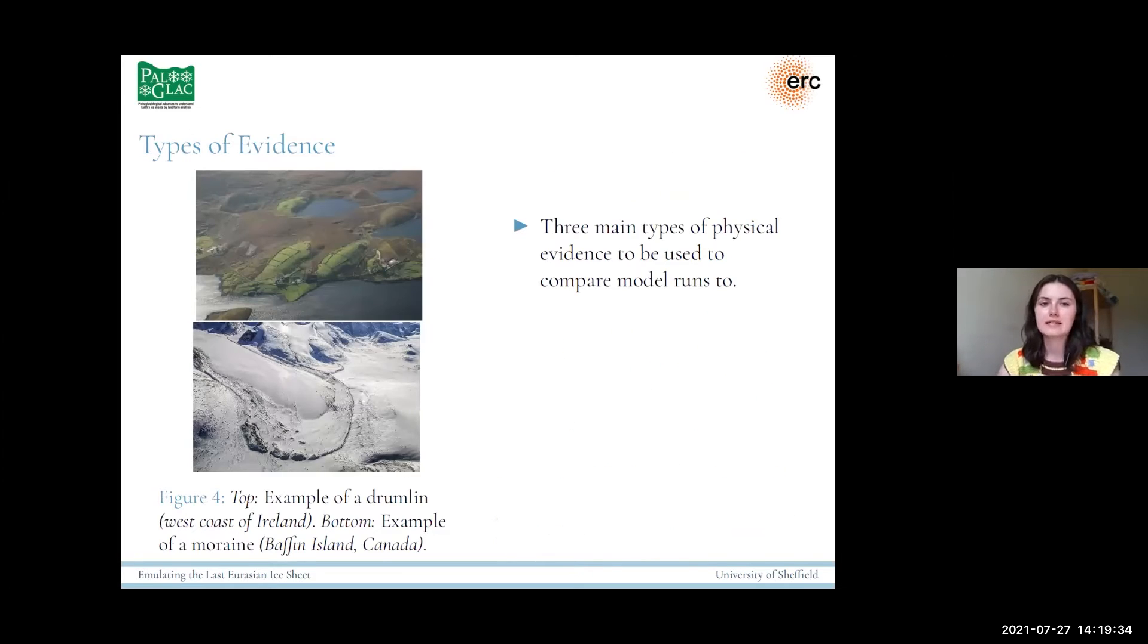So we have three main types of evidence. The evidence is not direct, so it can't tell us how thick the ice is, for example, or the speed of the ice sheet travelling. But it can give us indications of how the ice sheet moved over time. We've got drumlins, which are pictured in the top left, which are these hills. They're laid down as the ice sheet is moving, so they tend to form parallel to the ice flow. For example, in this picture, the flow would be going from bottom left to top right. So that's a good indication of the flow direction.